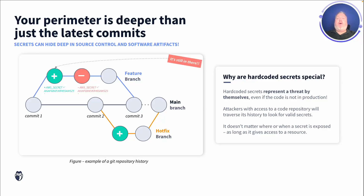Your perimeter is made up of your entire code base, not just the most recent commits or commits in the main branches intended for production. This is why performing a historical scan on each of your repositories is important to uncover where secrets might be hidden in your Git history.